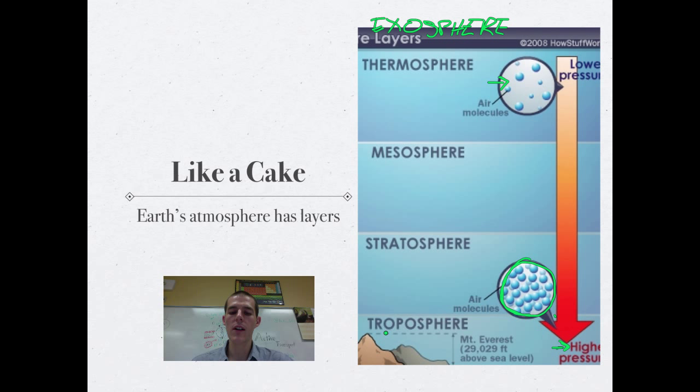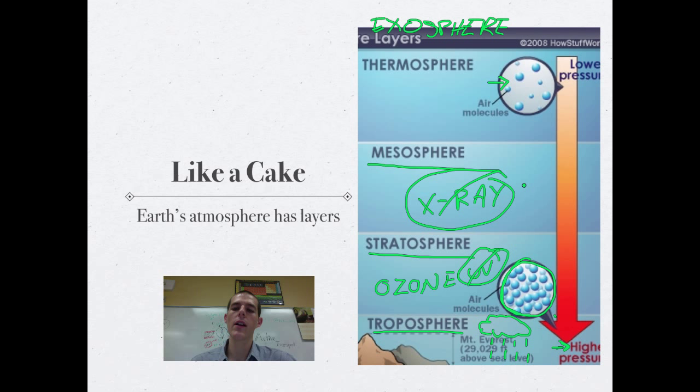A couple notes on each of the layers. First layer is the troposphere. The troposphere is the layer that we live in, and it is where all weather occurs. Next up is the stratosphere. This is where atmospheric ozone hangs out. The reason we like ozone is because it absorbs UV radiation. The mesosphere helps to absorb x-ray radiation. The thermosphere is the least dense layer of the atmosphere, and this is where the northern lights happen. And then exosphere is the boundary of space.